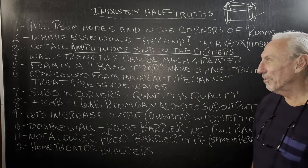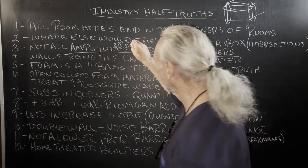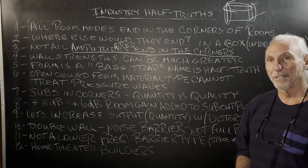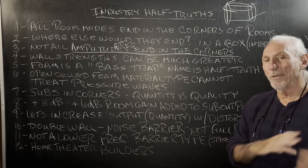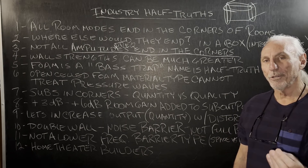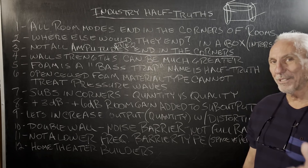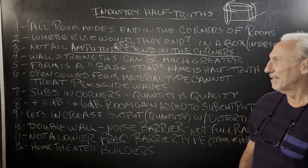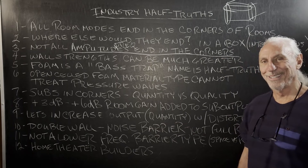Not all amplitudes end in the corners. And I would even add to that, not all frequencies. So what are we talking about? The goal is to treat frequencies and amplitudes. When we first design rooms and start looking at the dimensions, we look for the lowest frequency with the highest amplitude. That's the largest elephant in the room that you have to treat. The elevator to success is out of order — you have to take the stairs one step at a time. So you've got to go after the frequency and the amplitude. Who cares where it's located?